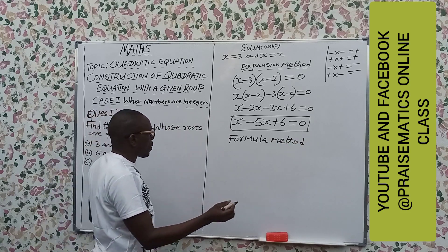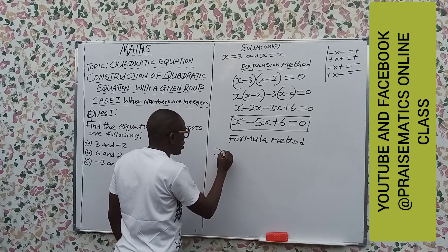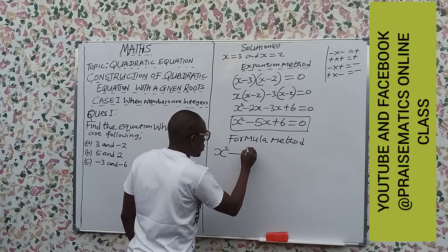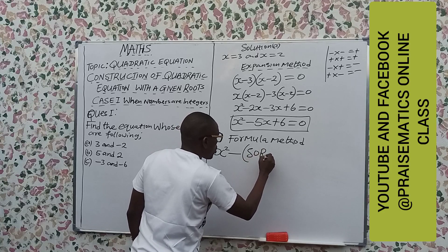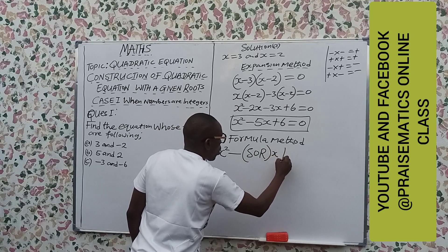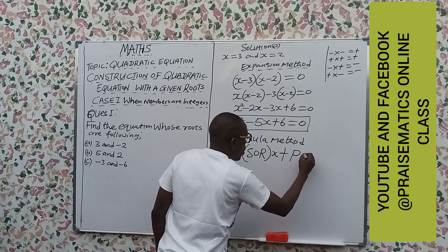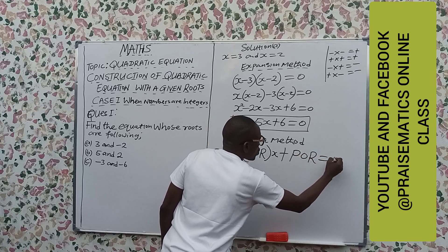And what does this state? Formula method says that x squared minus sum, minus sum x plus product equal to 0.